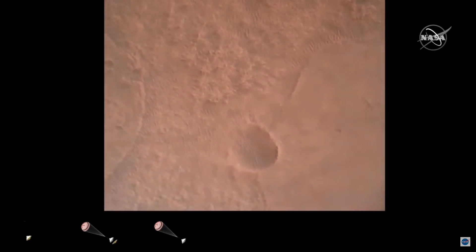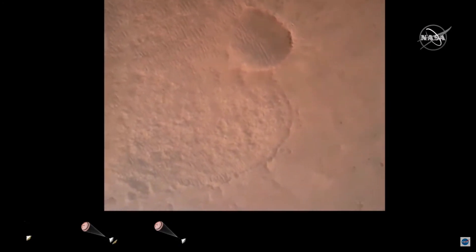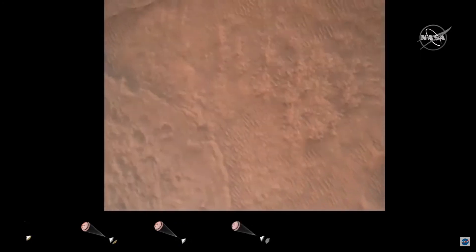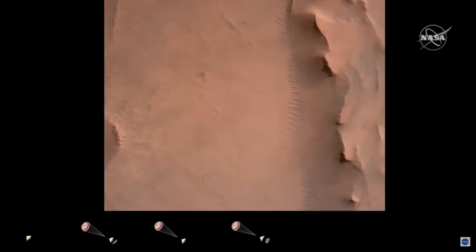Priming. PBA is nominal. We have priming of the landing engines. Current velocity is 83 meters per second at about 2.6 kilometers from the surface of Mars.